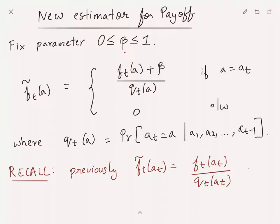Recall that previously the IPS estimate was just ft of a equal to ft of a by qt of a when a equals at and 0 otherwise. Here we have this additional bias term beta, so it's (ft of a plus beta) divided by qt of a. That's the modification we need to do to the estimator.